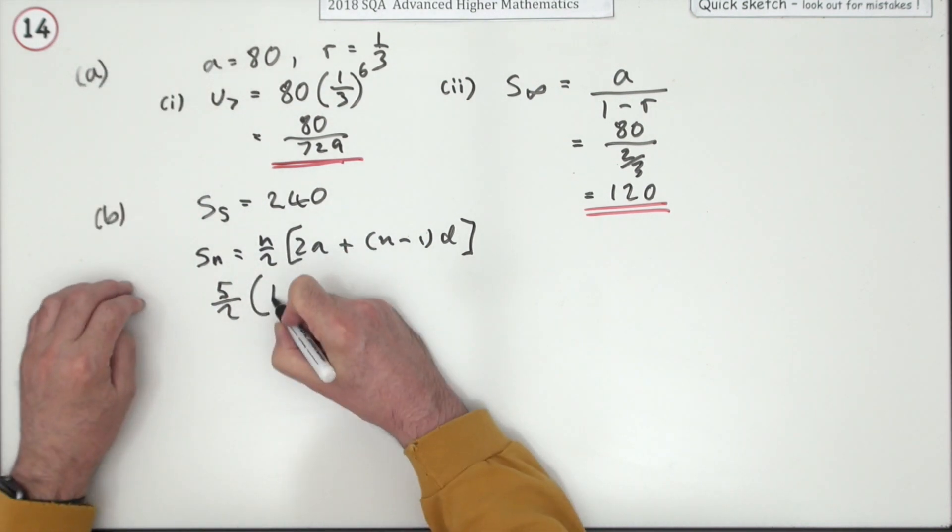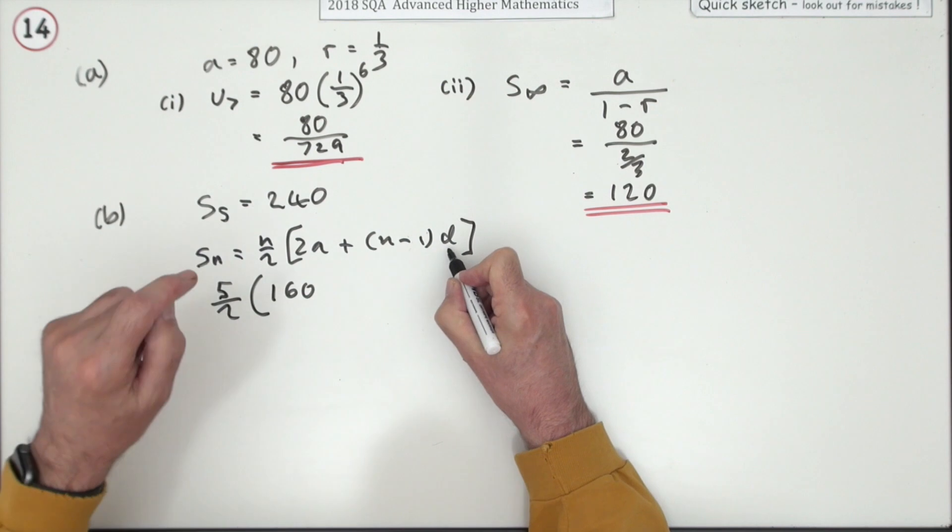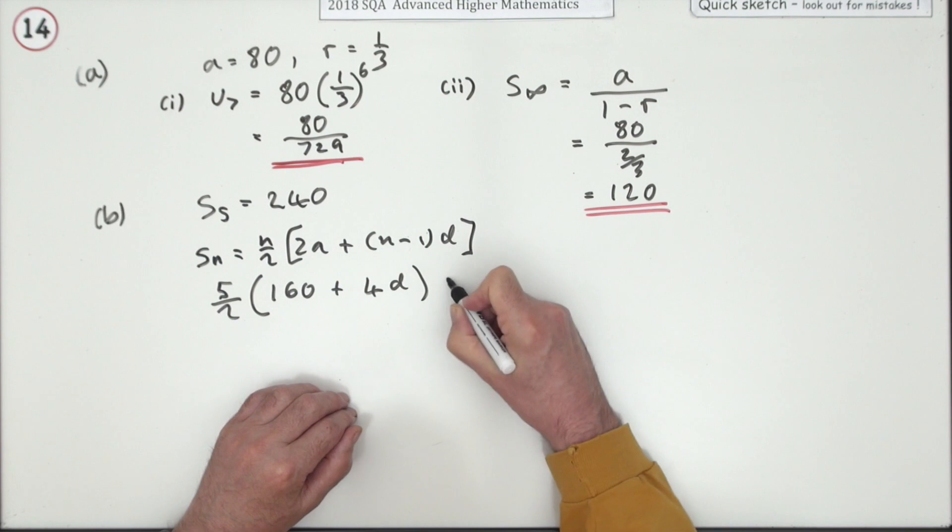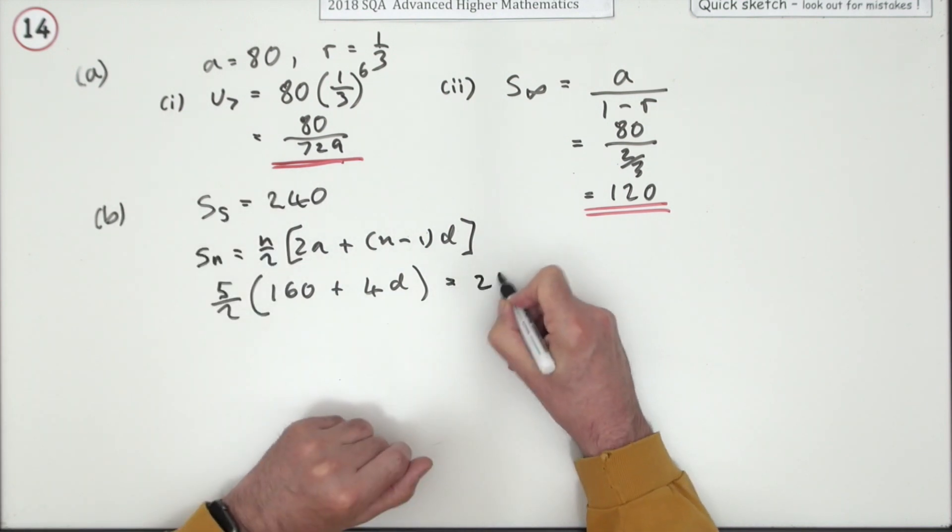2a, well, a was 80, so it'll be 160. d, I don't know, but n minus 1 will be 4. And that will come to 240.